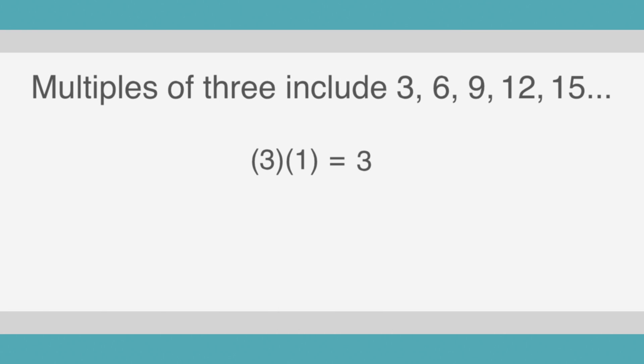So, multiples of 3 would include 3, 6, 9, 12, 15, and so on. Because 3 times 1 is 3, 3 times 2 is 6, 3 times 3 is 9, and 3 times 4 is 12.